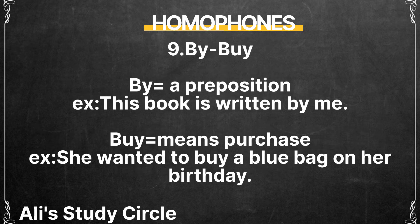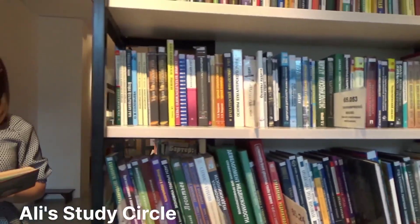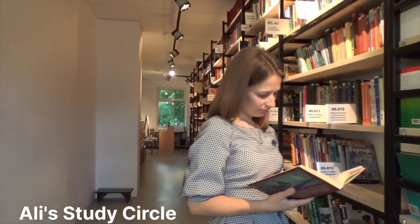Another homophone pair is 'by' and 'buy.' 'By' is a preposition — for example, 'This book is written by me.' 'Buy' means purchase — for example, 'She wanted to buy a blue bag on her birthday.' Next is 'dear' and 'deer.' 'Dear' means beloved — for example, 'My dear Asha, you are my beauty queen.' 'Deer' is a kind of stag — for example, 'I saw a herd of deer in the zoo.'